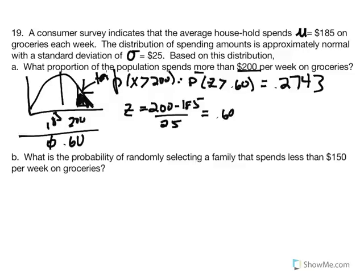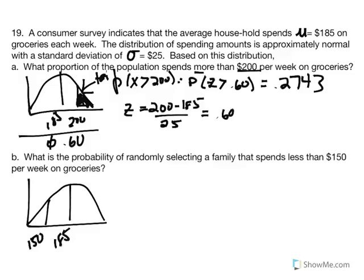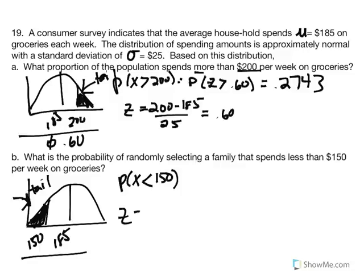That score of $200 is 0.60 standard deviation units above the mean. Next: what is the probability of randomly selecting a family that spends less than $150 per week? Because it says less, the shaded area is to the left — still the tail. Converting: Z equals (150 minus 185) divided by 25, giving a Z score equal to negative 1.40.